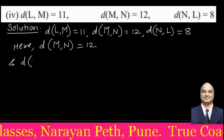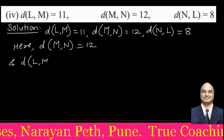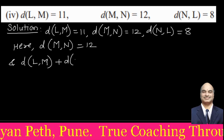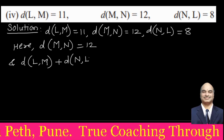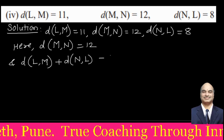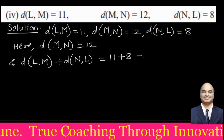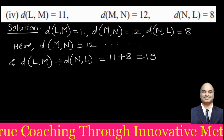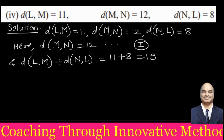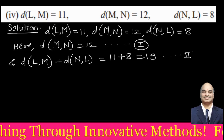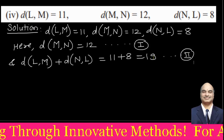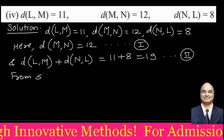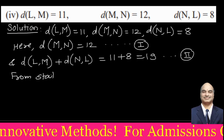The sum of the other two distances, LM and NL, gives 11 plus 8 which equals 19. Comparing statement 1 (MN = 12) and statement 2 (sum = 19), they are not equal.